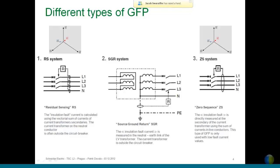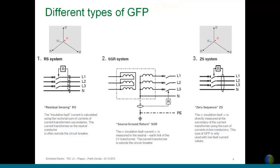From the left we see the RS system — Residual Sensing. It works on the principle of the vectorial sum: we are measuring each working phase and the neutral separately, and we calculate the vectorial sum of these conductors to determine the ground fault or residual current from that sum.